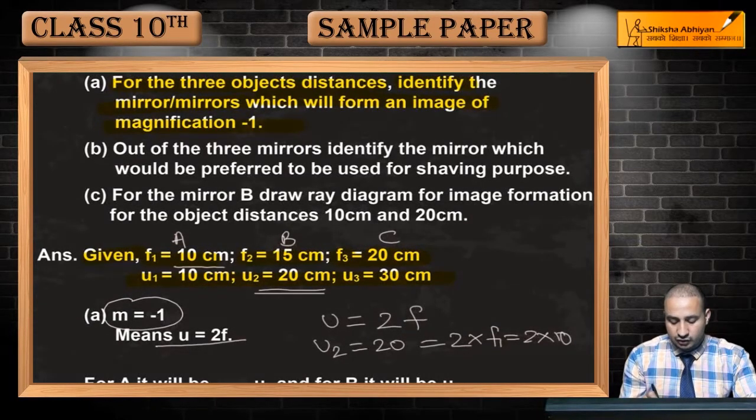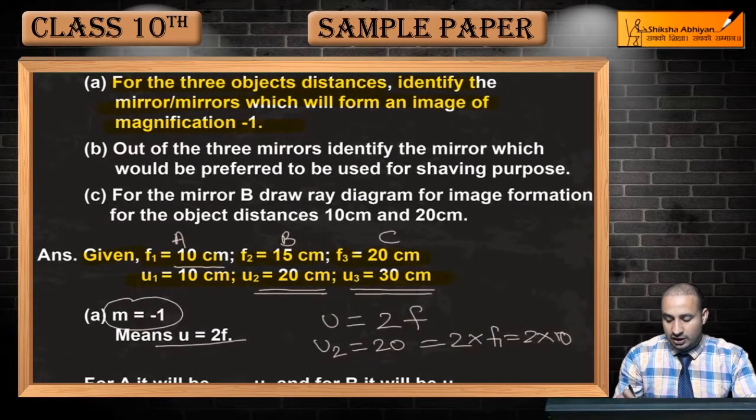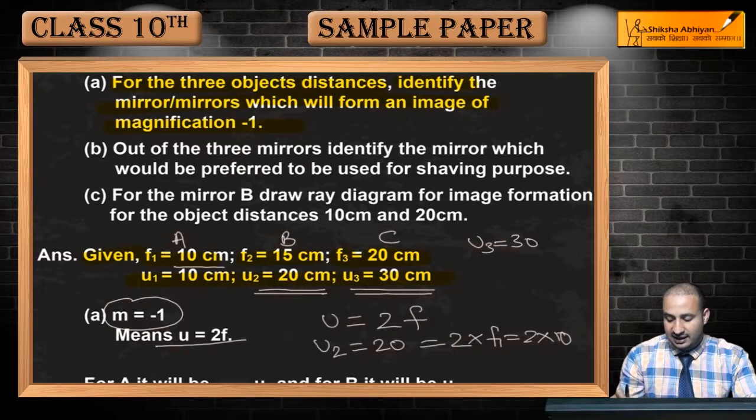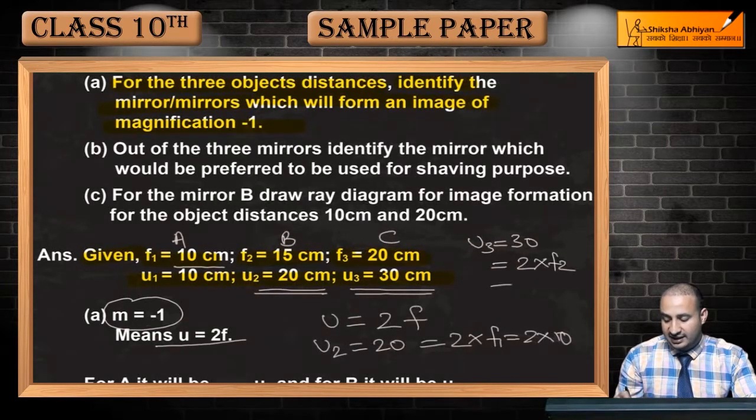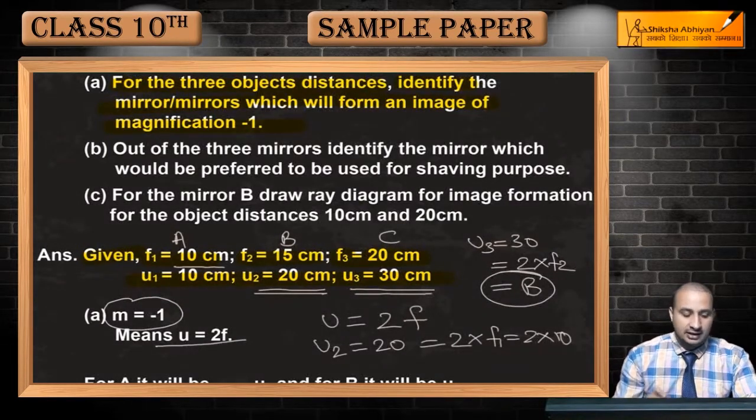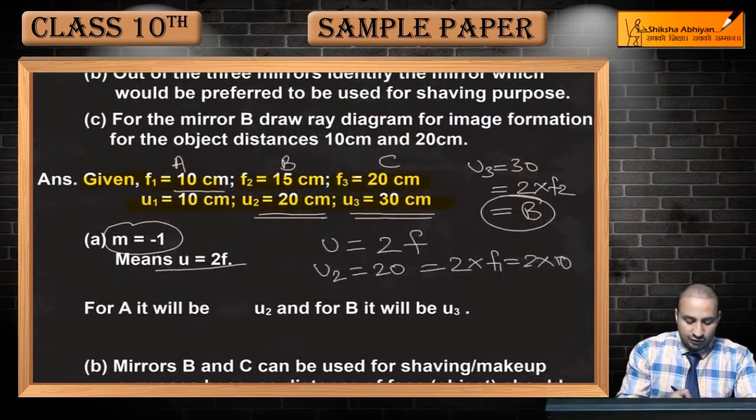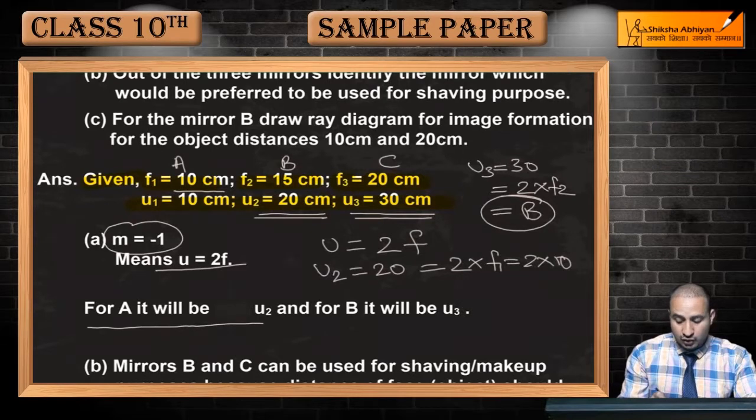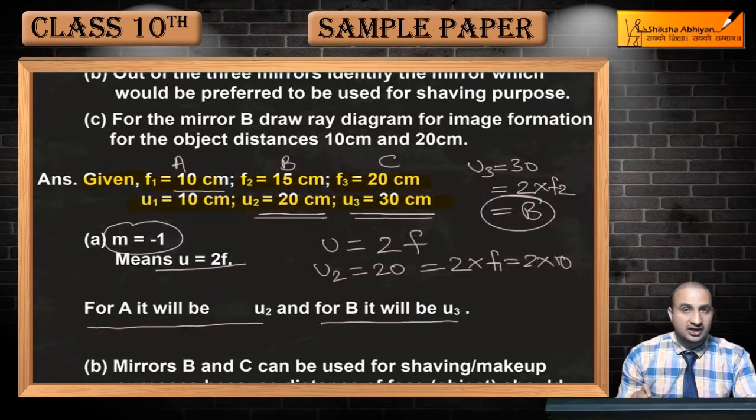Jo object ka distance hoga wo 20 hoga. Aur mirror B ke liye object ka distance 30 hoga kyunki yahaan par jawab lenge u3 aapka kitna hai? 30 hai jo ke aayega 2 into f2, yani ke ye B mirror ke liye jo hai focal length hai. To hum yahaan par dekhenge for A it will be u2 and for B it will be u3 hoga.